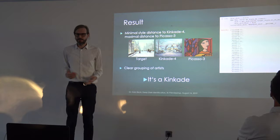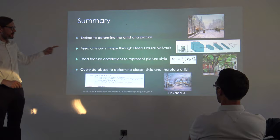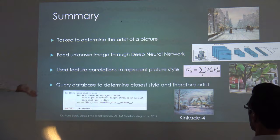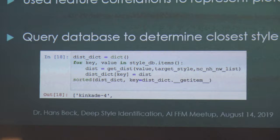Yeah, to summarize: the task is to determine the artist of a picture. We feed the unknown image through a neural network, we use the feature correlations to represent the picture style, and then query our database with these to determine the closest style and therefore the artist. And that's it. Thank you.